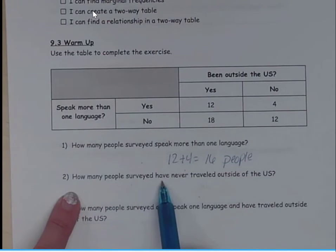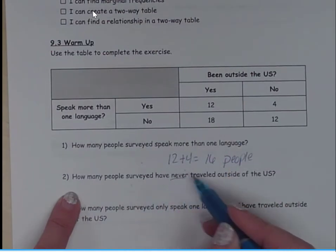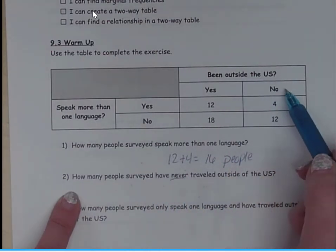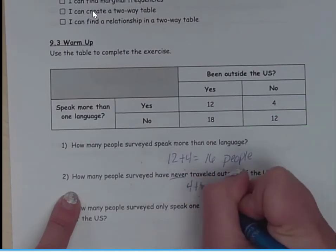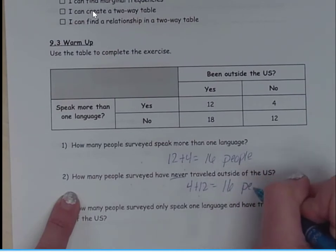Now how many people surveyed have never traveled outside of the US? Been outside the US? Nope. So that's this data right here. That is 4 plus 12, which is also 16 people.